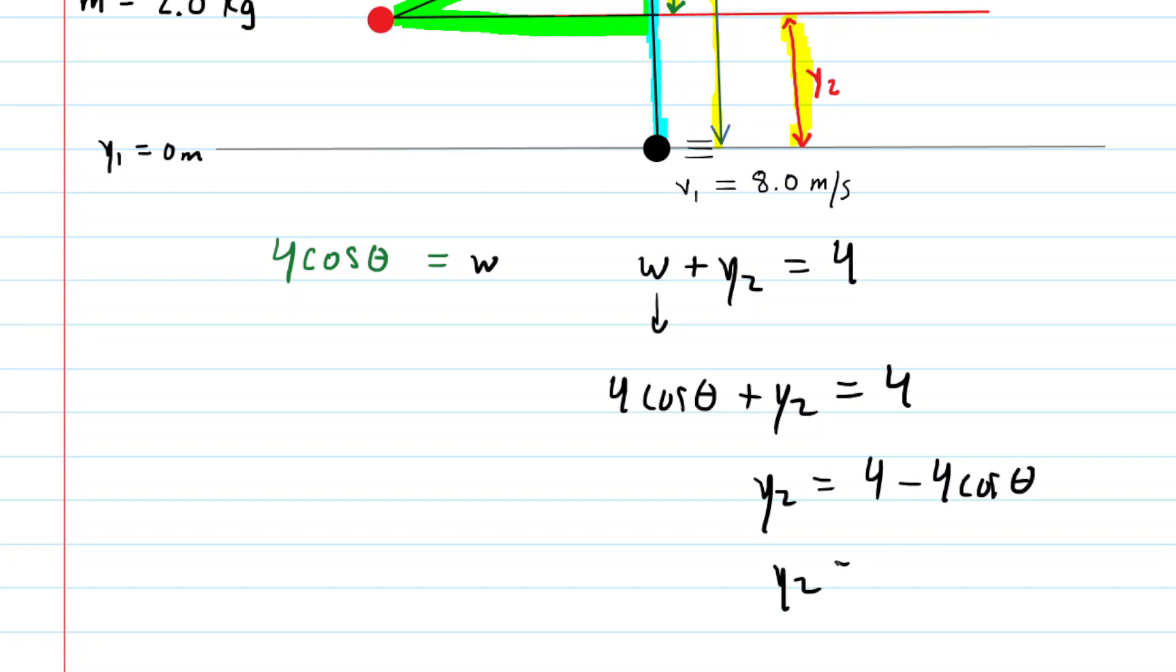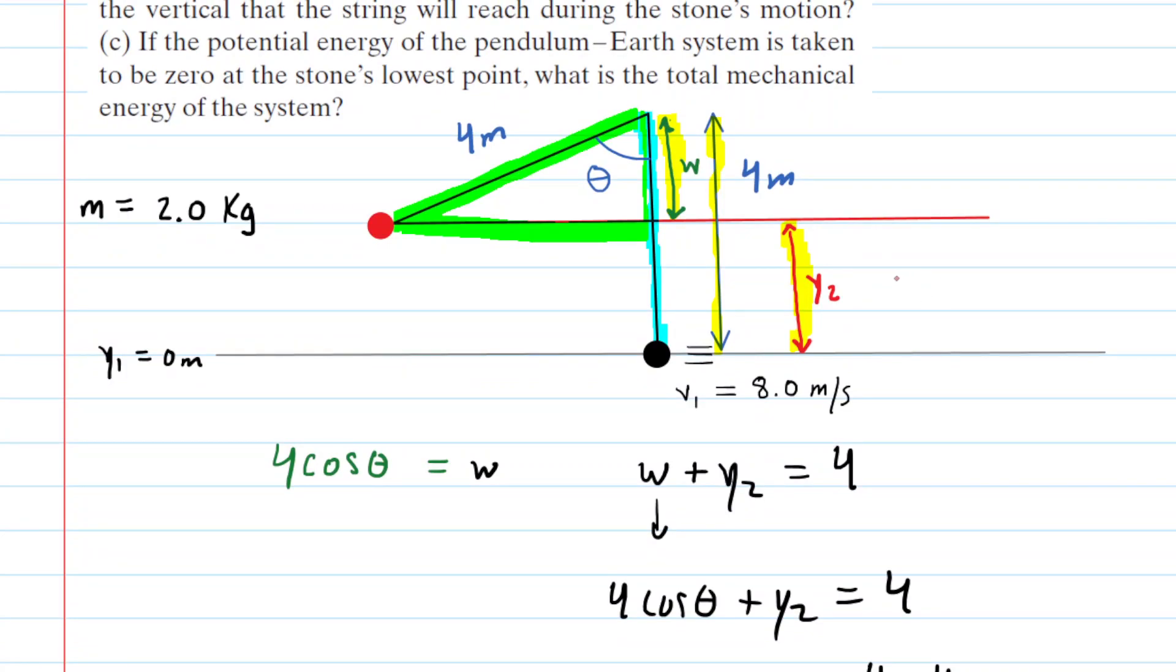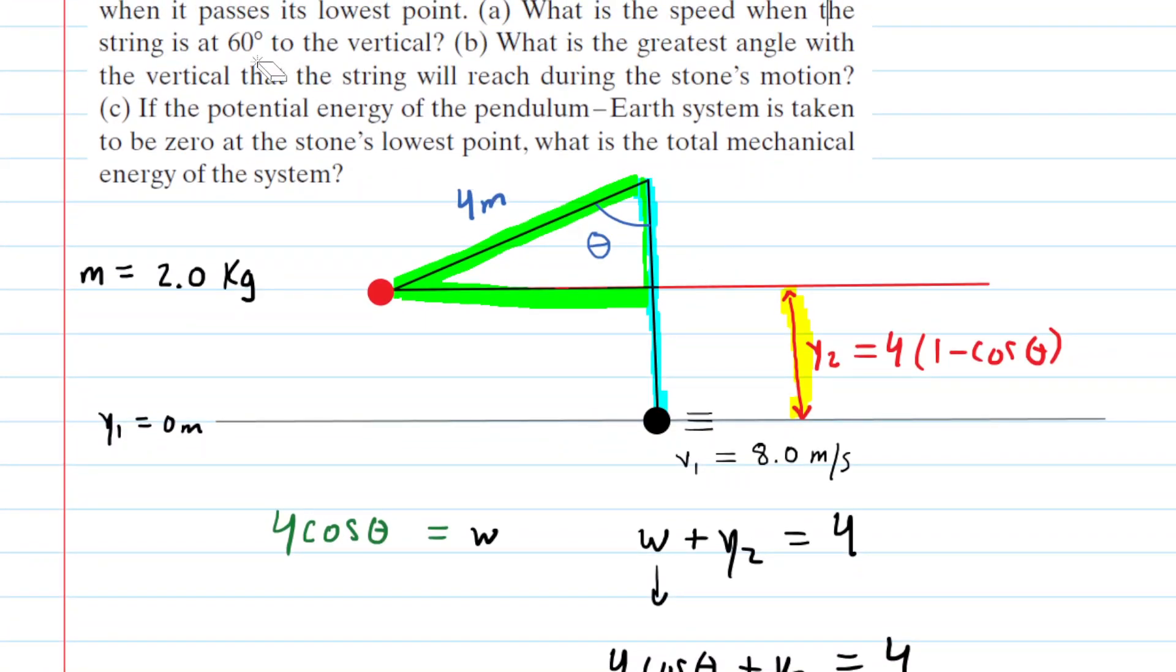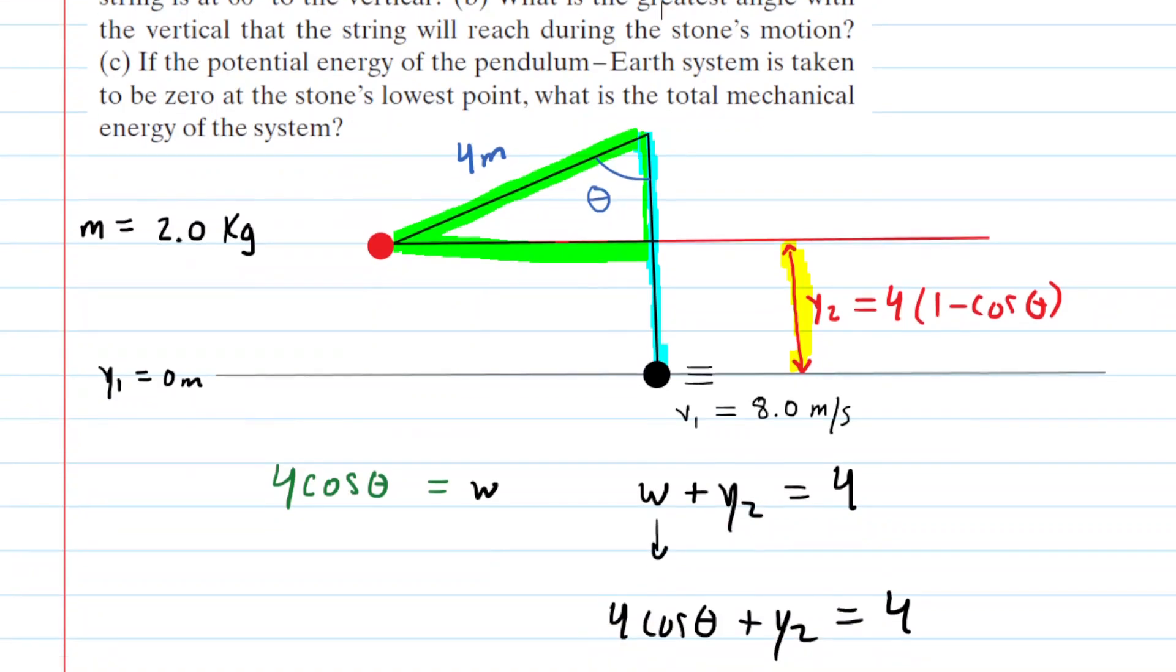We can get a little fancy, perhaps, and factor out the 4. We would have 4 times the quantity 1 minus cosine theta. So, let's go back to our drawing and label y2 as equaling 4 times the quantity 1 minus cosine theta. Now, we will see momentarily why that is useful to us. We can clean up the drawing a little bit. And now we want to start thinking about how to actually solve for part a. Part a gives us the angle and we need to calculate the speed at that particular angle.